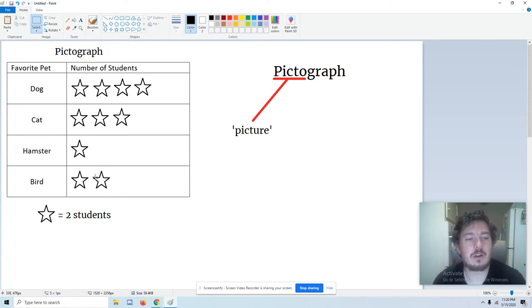What about cat? Well, cat has three stars, and each star is worth two people. So let's skip count by twos to find the answer. Two, four, six. So six people picked the cat as their favorite pet. One star is two people. Another star is another two people. Two plus two is four. And a third star, four plus two is six. Six people picked the cat.